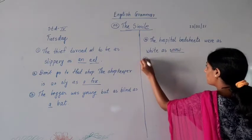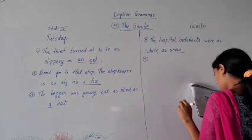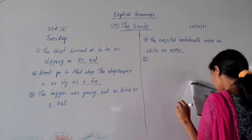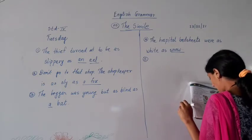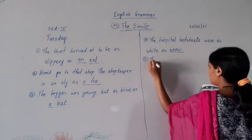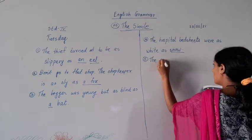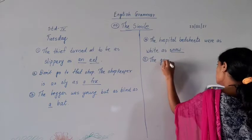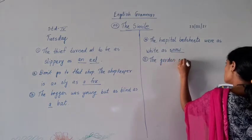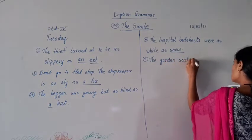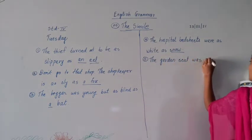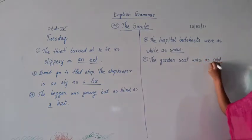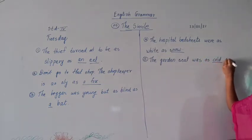Fifth one: the garden seat was as cold as ice.